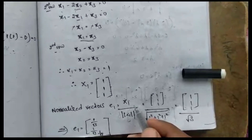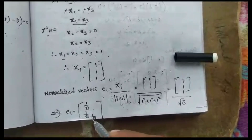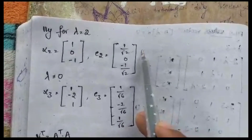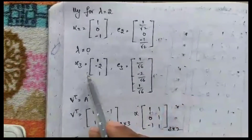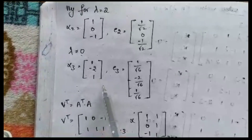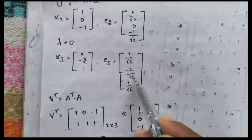We normalize the vector: e1 = x1 / |x1| = [1/√3, 1/√3, 1/√3]. Similarly for λ = 2, we get eigenvector x2 = [1, 0, −1] and normalized vector e2 = [1/√2, 0, −1/√2]. For λ = 0, the eigenvector is x3 = [1, −2, 1] and normalized vector e3 = [1/√6, −2/√6, 1/√6].